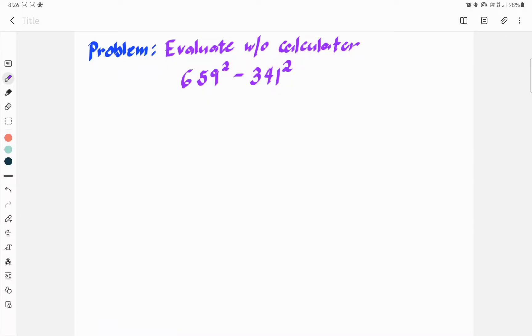Hi everyone, welcome to this video. In this video, we're going to solve a problem, which is evaluate without calculator 659 square minus 341 square.